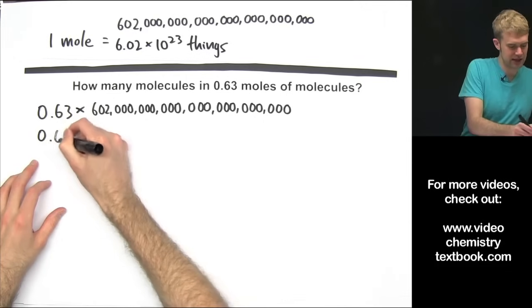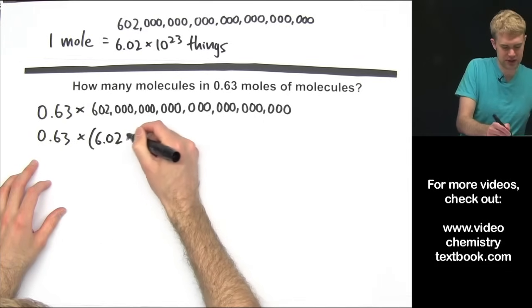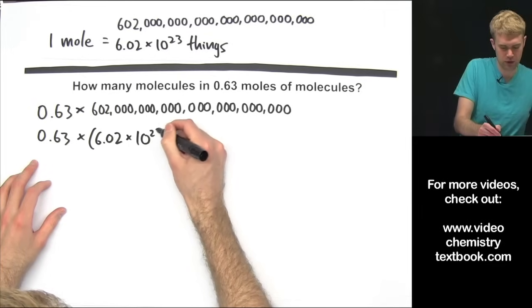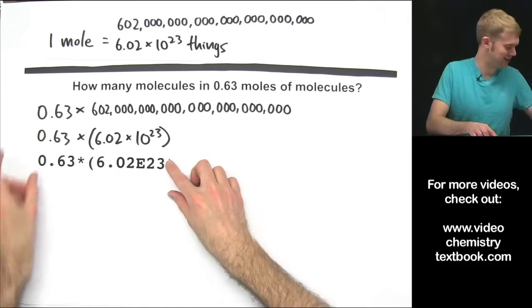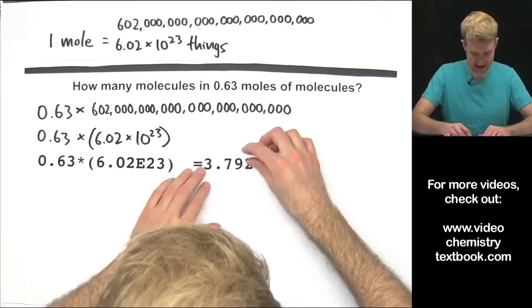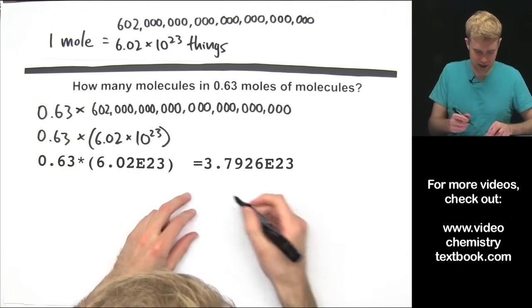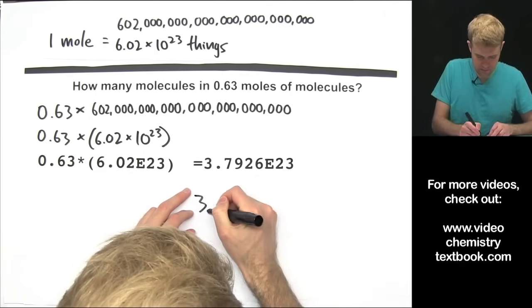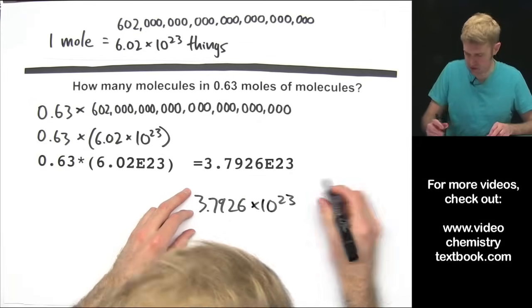Let's rewrite this in scientific notation. 602 hexillion as 6.02 times 10 to the 23rd. We're going to put it in the calculator like this. We're going to get this as the answer. The first thing let's do is write this in regular scientific notation: 3.7926 times 10 to the 23rd.